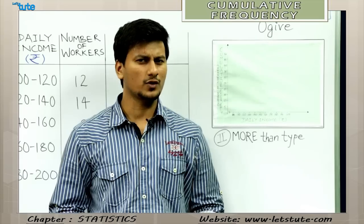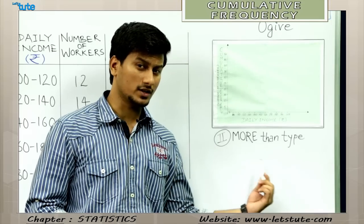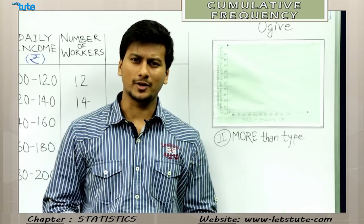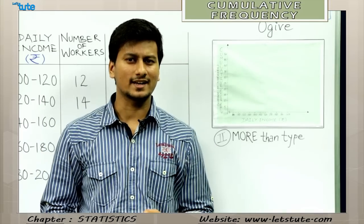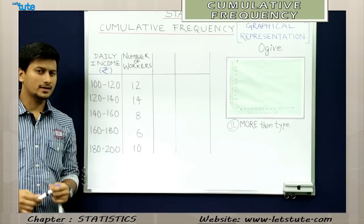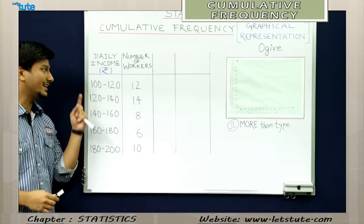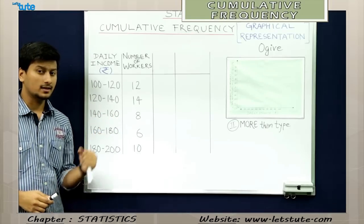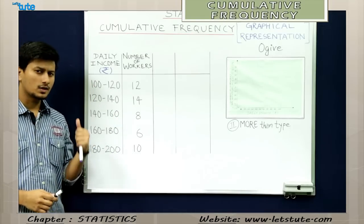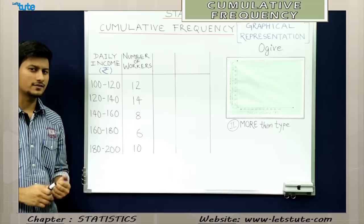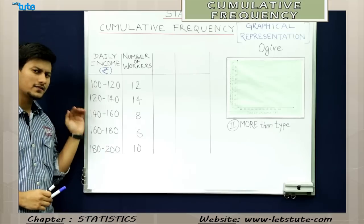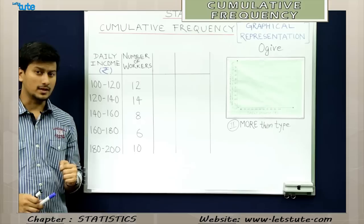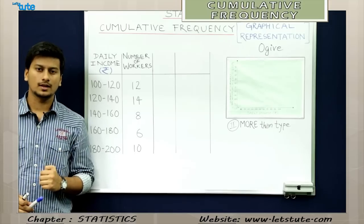Now we wonder why the name 'more than type'. To understand it better, let's take an example. I have data regarding the daily income of some workers in terms of Indian rupees. This data is divided into five smaller groups, meaning I have grouped data.